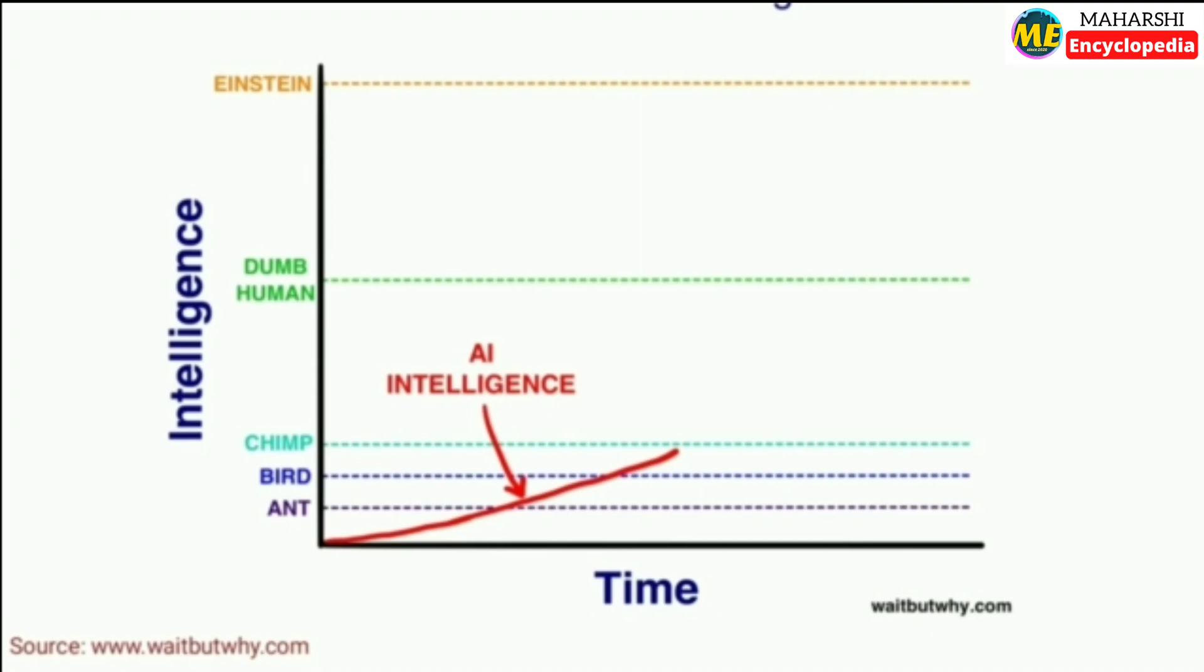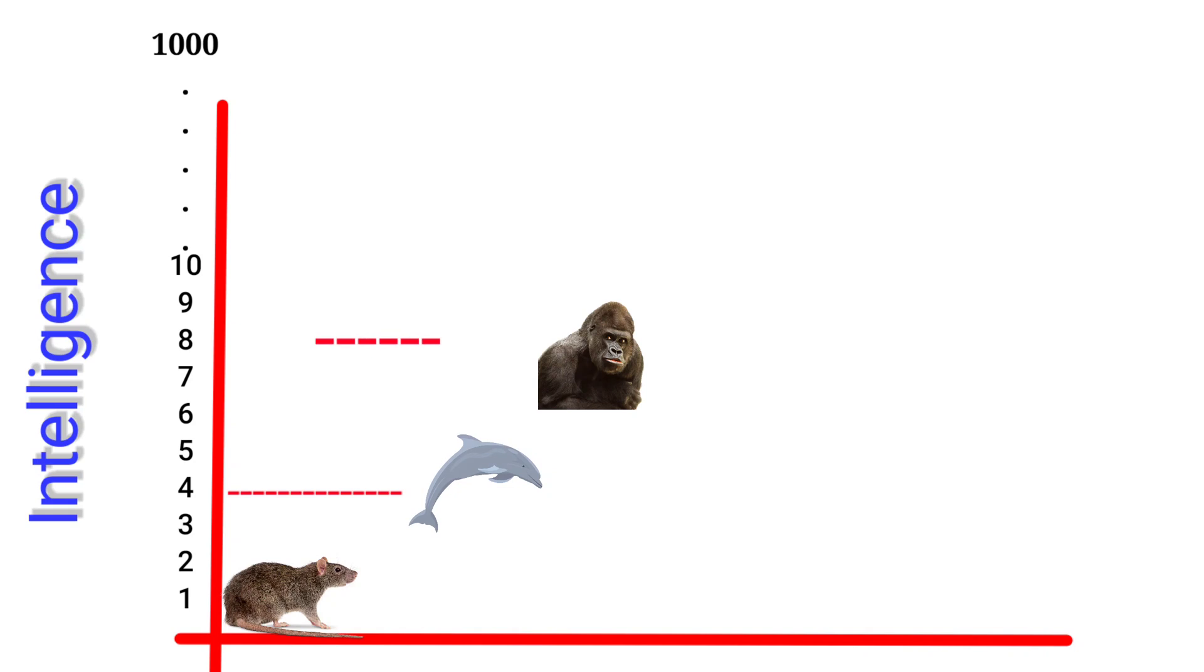When artificial intelligence was given a program to learn itself, then in a short period of time it crossed the IQ level of Einstein. For example, if we map one to a thousand all the creatures on this earth in terms of intelligence, the rat will come at one and dolphin at four, chimpanzee at eight and man at ten. But artificial intelligence will come close to a thousand.